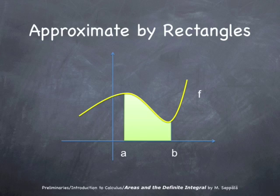So what we do is that we divide the interval from a to b into subintervals, and over each subinterval we place a rectangle that in some optimal way approximates that part of the yellow domain lying over that particular subinterval.